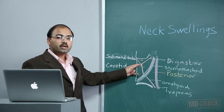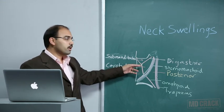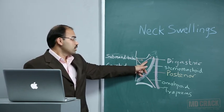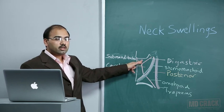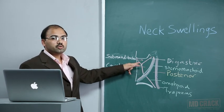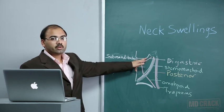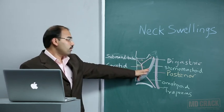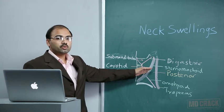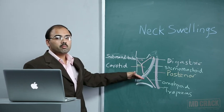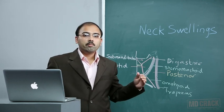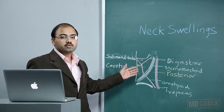The anterior triangle is again divided into various triangles by the digastric muscle, which has an anterior belly and posterior belly. We have the submandibular triangle and the carotid triangle, which is formed by the superior belly of the omohyoid, posterior belly of digastric, and anterior margin of sternocleidomastoid muscle. The posterior triangle is divided into superior and inferior triangles by the posterior belly of the omohyoid muscle.